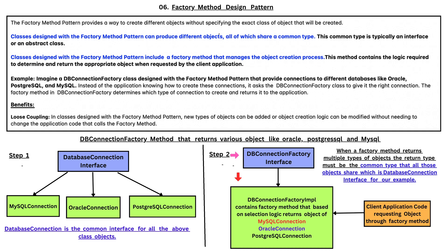In Step 2 of this Pictorial Diagram, we have the DBConnectionFactory interface. This DBConnectionFactory interface is implemented by the DBConnectionFactoryImpl class. This class contains a Factory Method that, based on selection logic, returns an object of MySQL connection, Oracle connection, or PostgreSQL connection. The client application code requests objects through this factory method. When a factory method returns multiple types of objects, the return type must be the common type that all those objects share, which is the DatabaseConnection interface in our example.